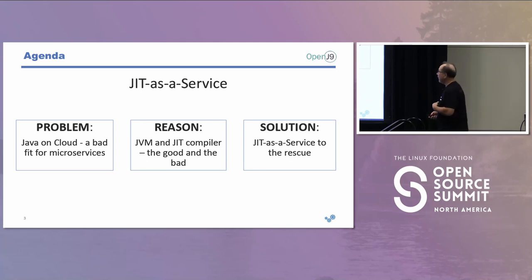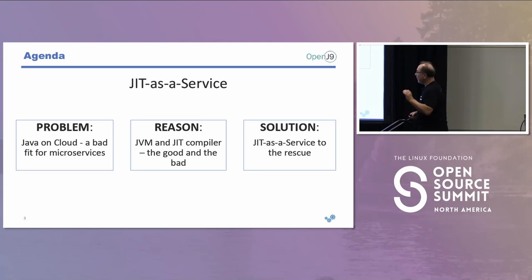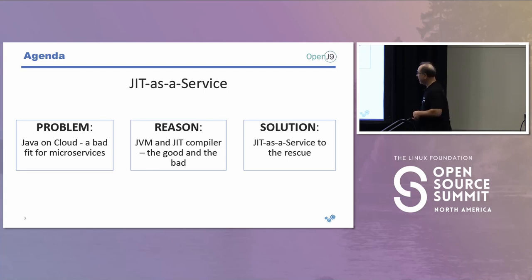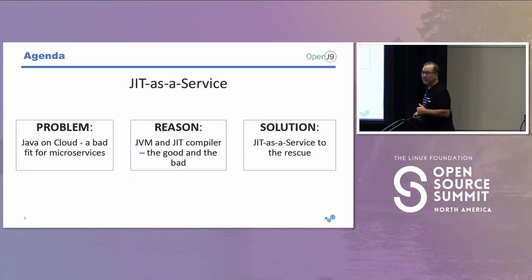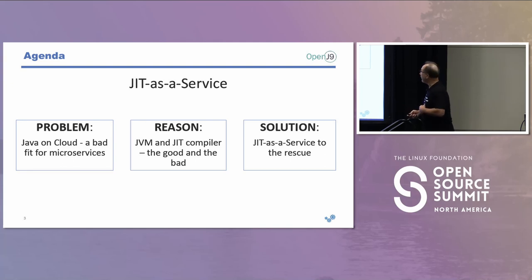So we're going to talk about three things: the problem, which is Java on cloud — specifically distributed architectures like microservices and serverless; the reason this is a problem, which is the JVM and the JIT; and then the solution, which is JIT as a service.